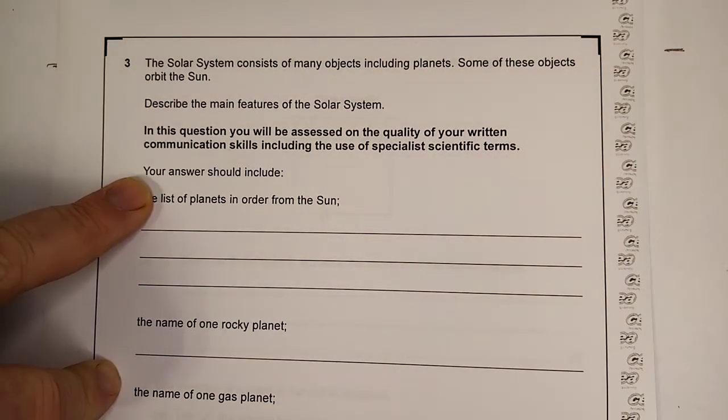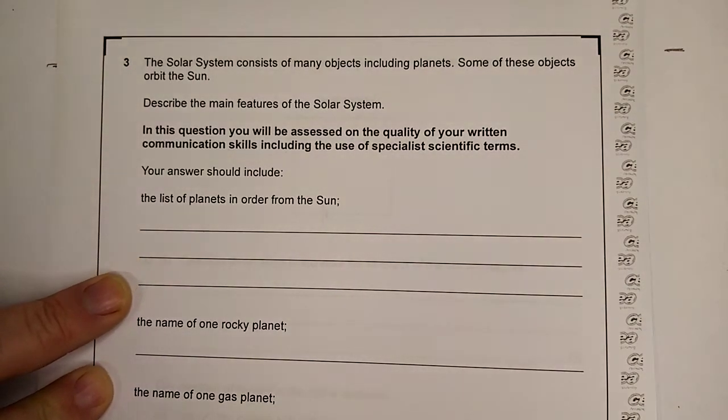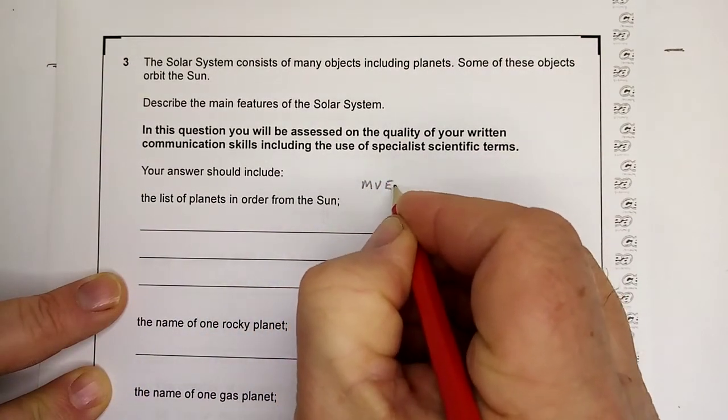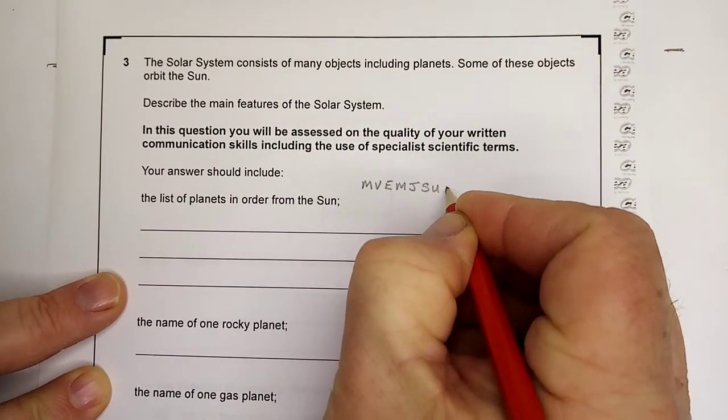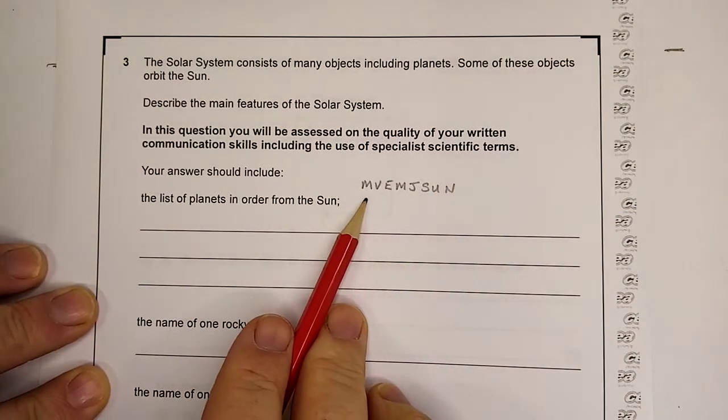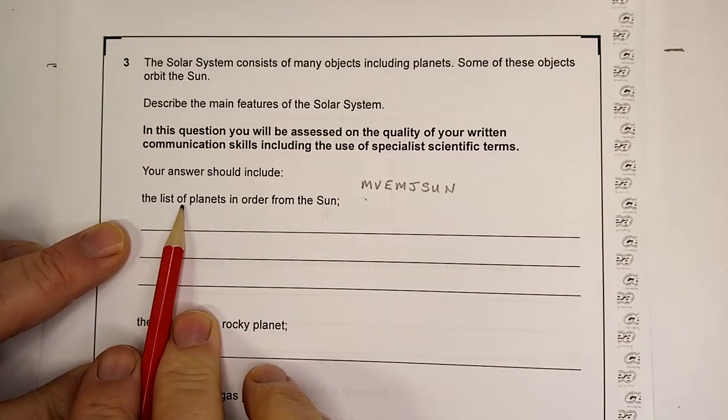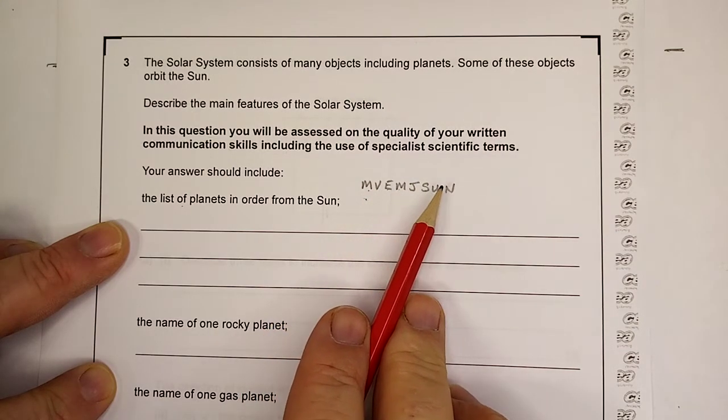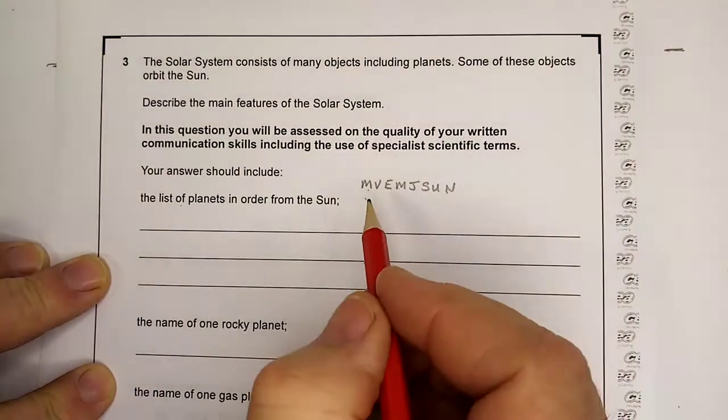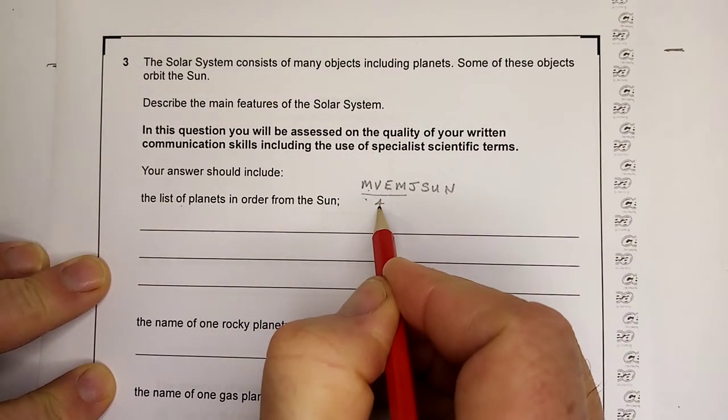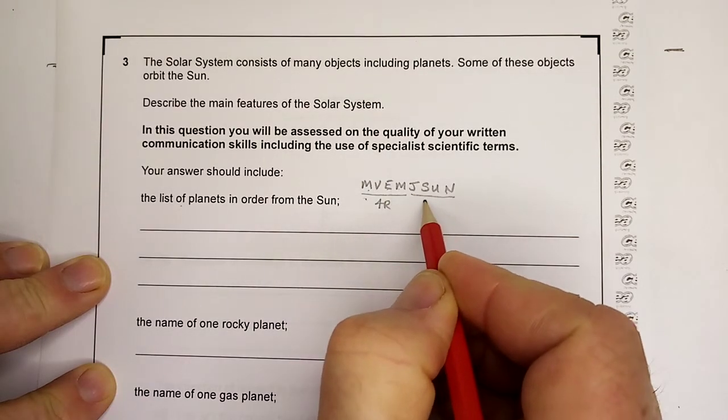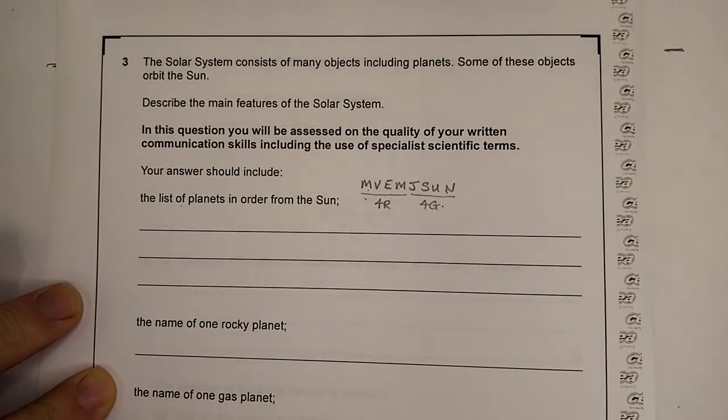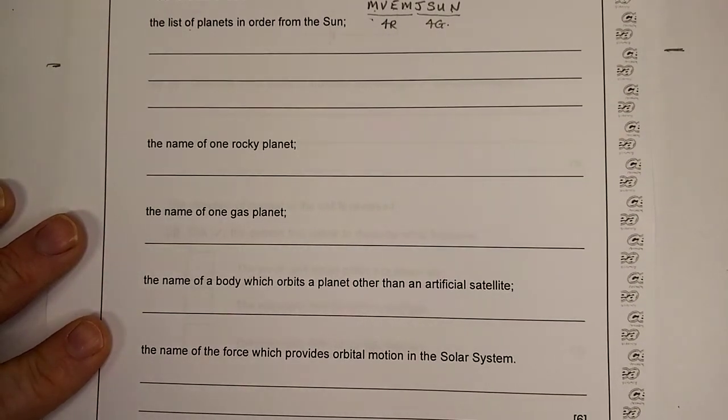Your answer should include a list of the planets in order from the sun. Remember, my very evil mother just served us nothing. It's a mnemonic. It should be written on the paper. The list has to be a list. So, Mercury, Venus, Earth, Mars, Jupiter, Saturn, Uranus, Neptune.